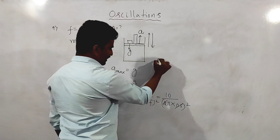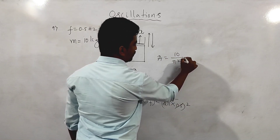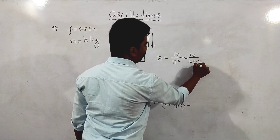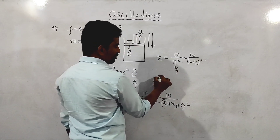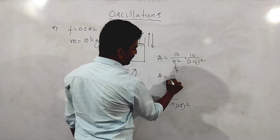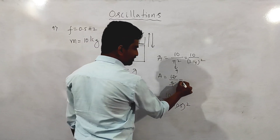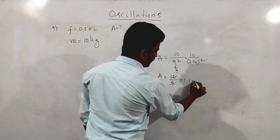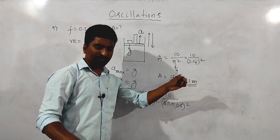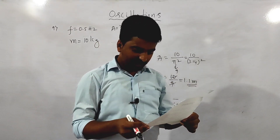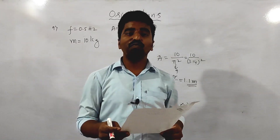So amplitude A equals g divided by omega squared. With frequency 0.5 Hz, omega equals 2 pi times 0.5 equals pi. So A equals 10 divided by pi squared. Since pi squared is approximately 9.87, this gives approximately 10 divided by 9.87, which is approximately 1 meter. The answer for the question is 1 meter.